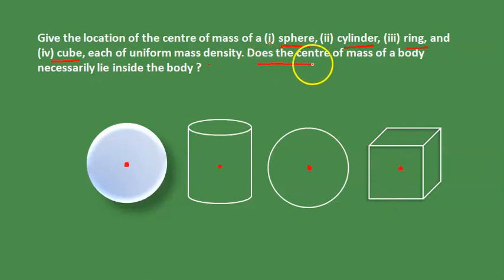Second point: does the center of mass of a body necessarily lie inside the body? The center of mass is within the system, but not necessarily inside the body itself. For example, a ring - the mass is distributed around the perimeter, but the center of mass is within the system at the center.